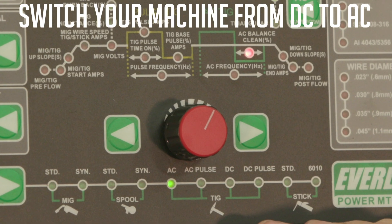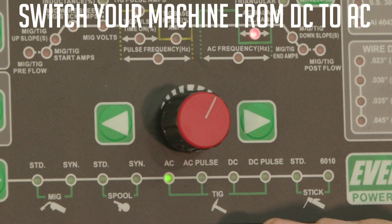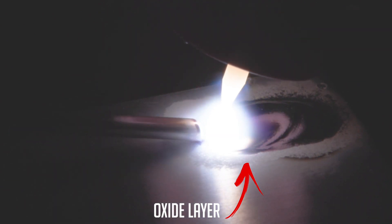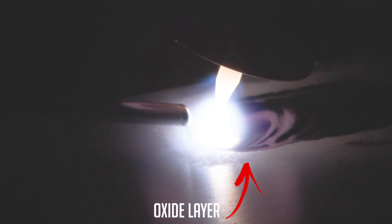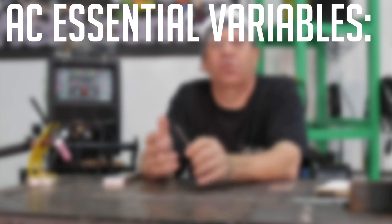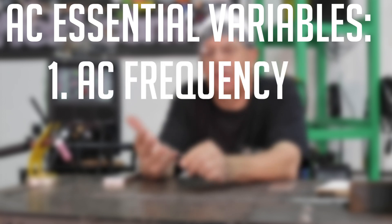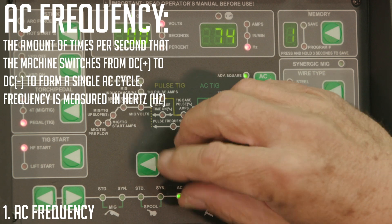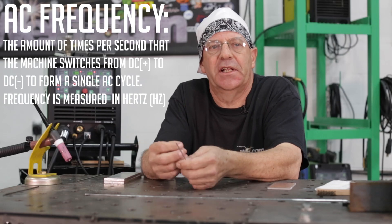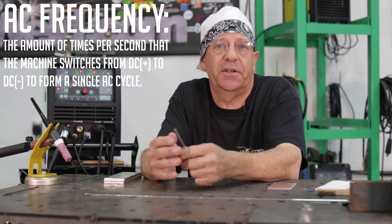The first thing is we're going to switch from DC to alternating current. The reason we use alternating current on aluminum is it helps break up the oxide layer. Yes, we're going to clean it, but aluminum likes that alternating current. In AC welding on aluminum, we focus on a couple essential variables. One is frequency. On this machine, we've set it at 60 because 60 is like an old time transformer machine. That's just normal output.